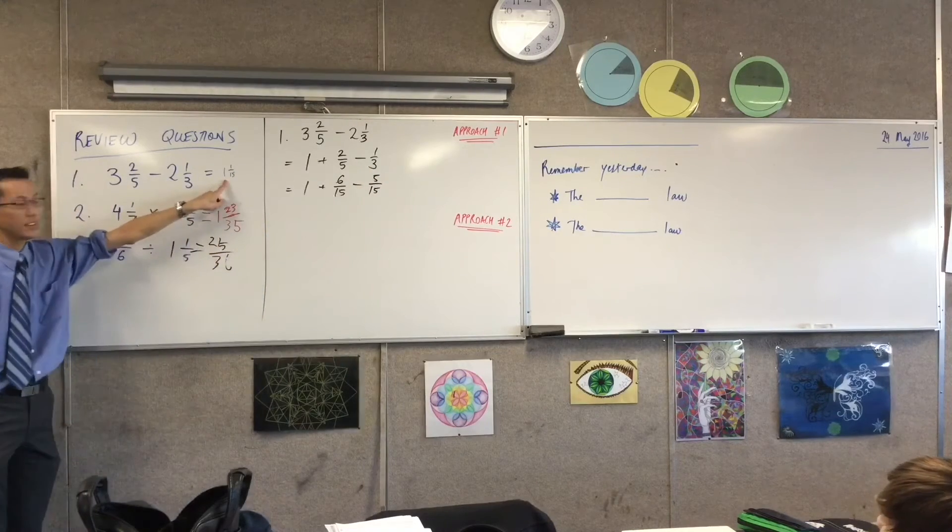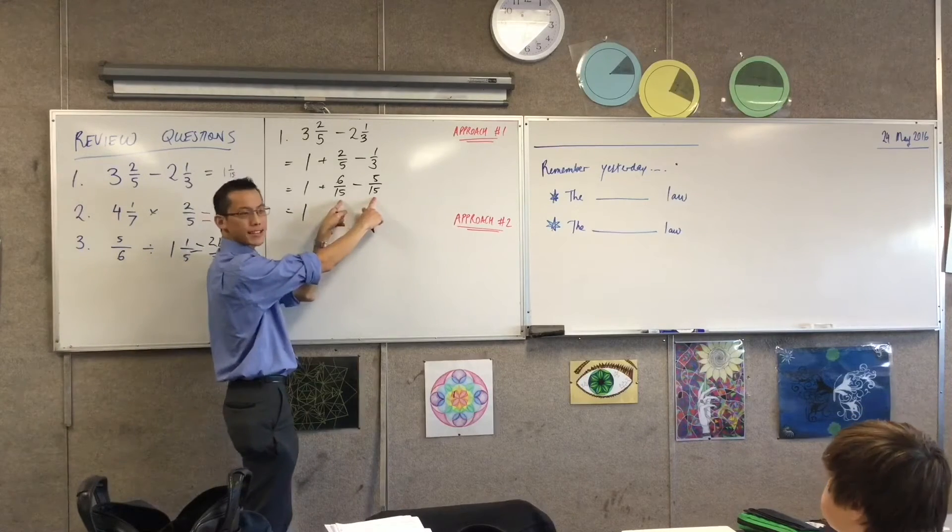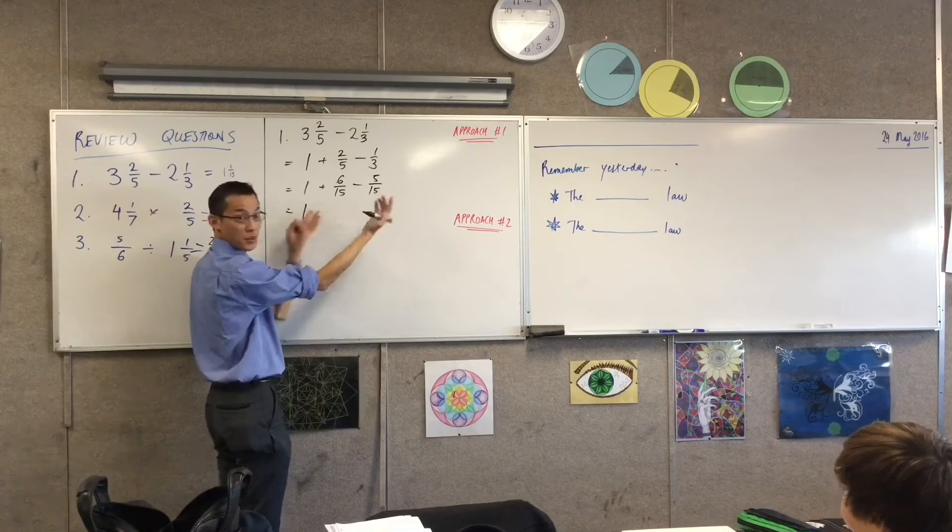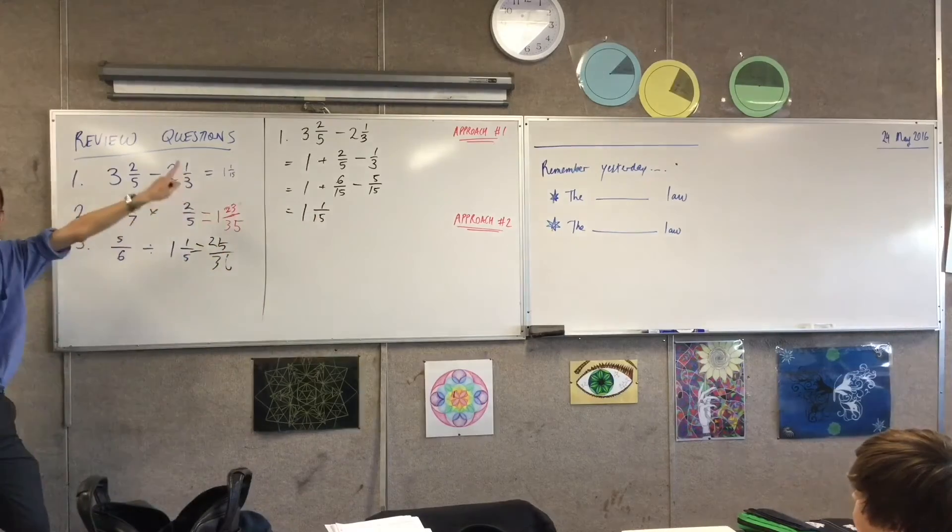And you can see that's why this is correct, because now that I've got this one, how many fifteenths am I left with? One, just the one of them. So, lovely. And that was approach one.